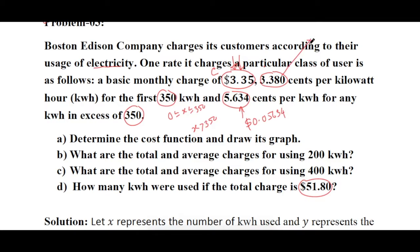So 5.634 cents converts to 0.05634 dollars, and 3.380 cents converts to 0.0338 dollars. Now the problem is exactly the same as what we did before for the gas bill in part one.